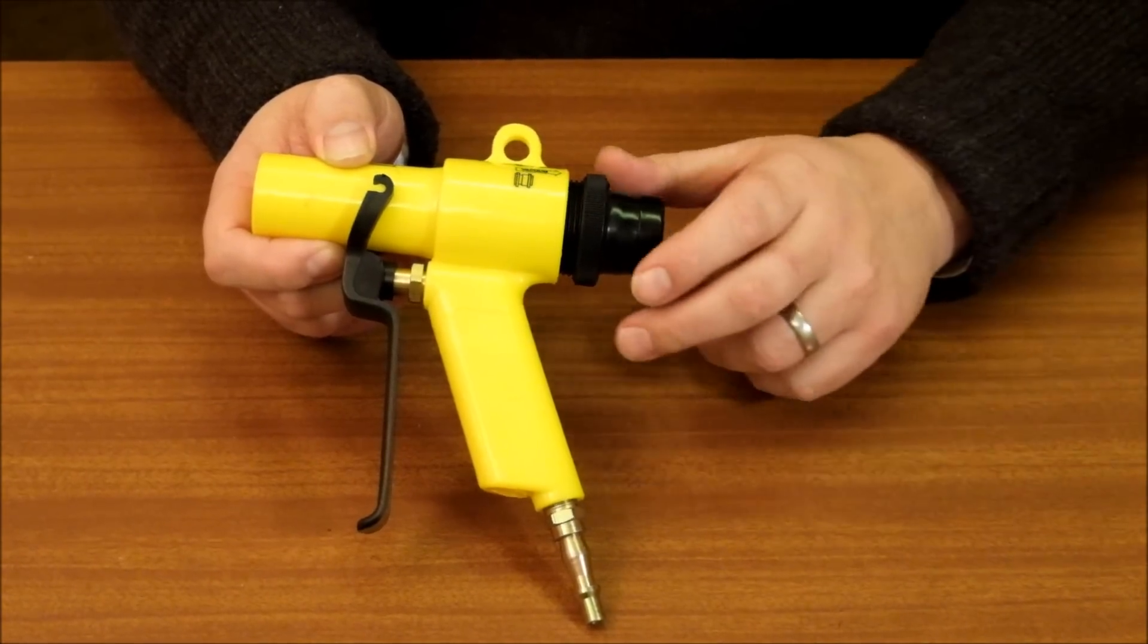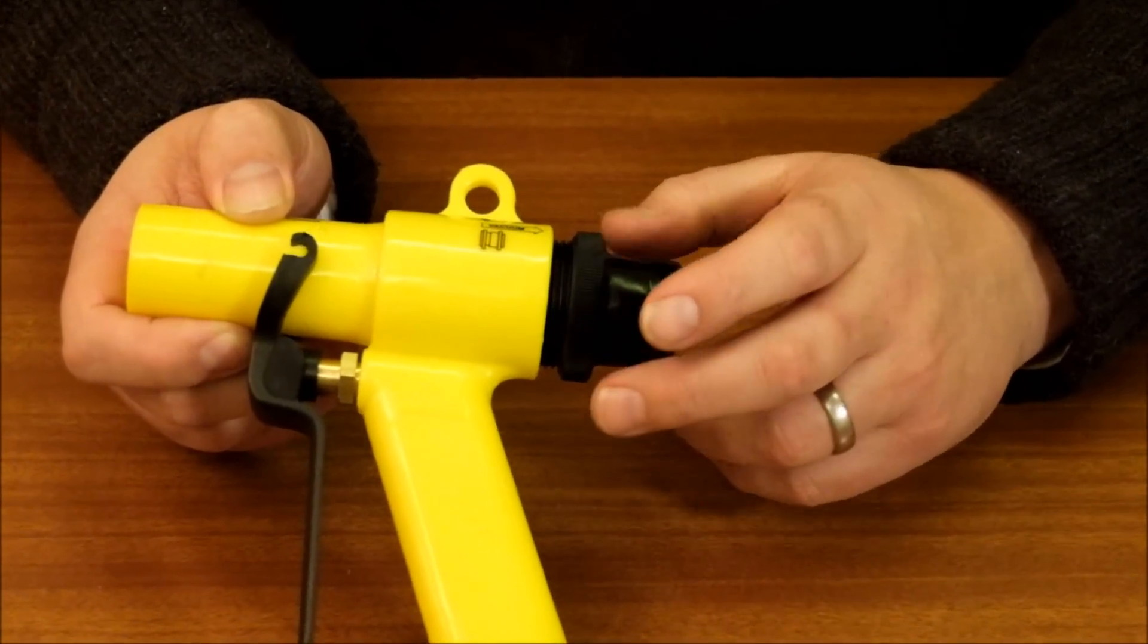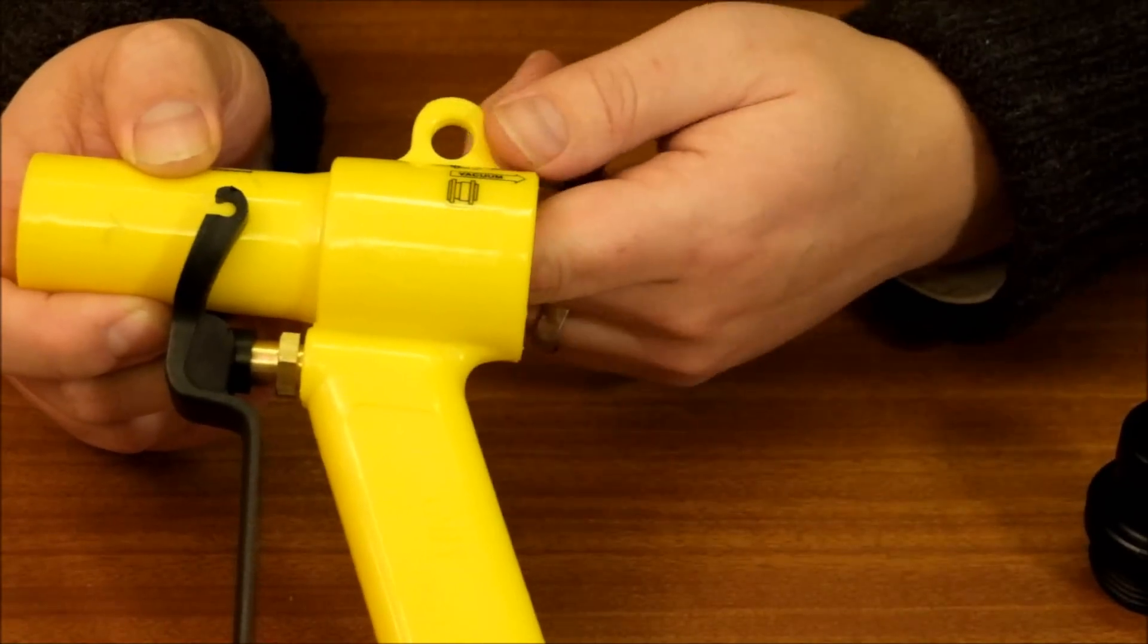The black Venturi adapter allows you to either suck or blow simply by unscrewing from the rear of the gun and reversing the Venturi insert.